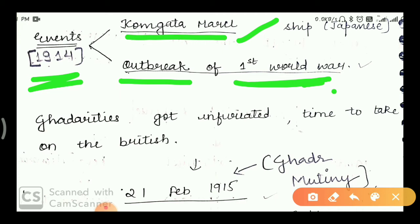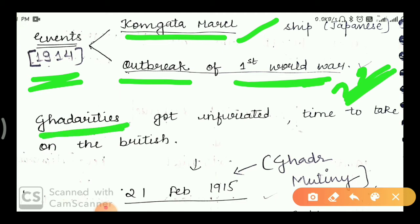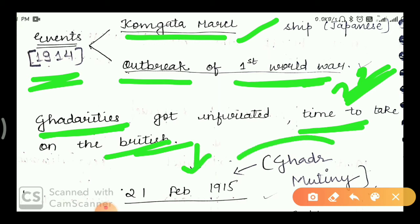The killing of those 22 people infuriated the survivors. They became very angry and decided that this was the time to take on the British. Now they would start a mutiny. Officially, the mutiny started.